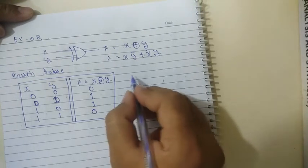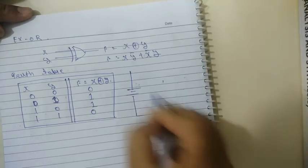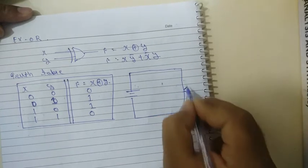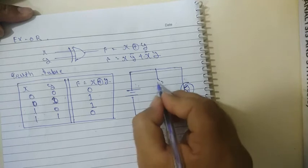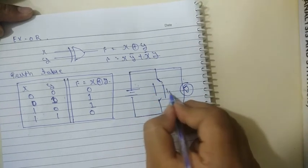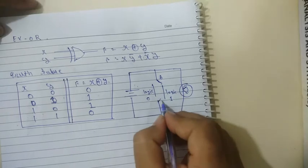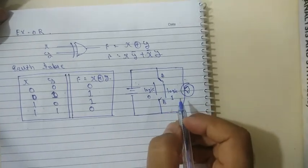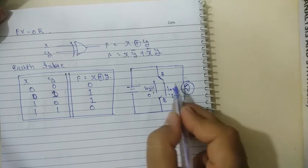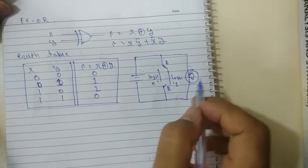For the electrical equivalent circuit of the XOR gate, with logic 1 and logic 0 references and switches A and B: if both A and B are connected to logic 1 or both to logic 0, the lamp will not glow. If one switch is connected to logic 1 and the other to logic 0, then the lamp will glow.